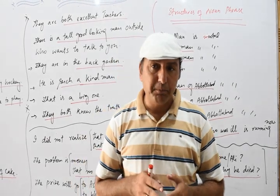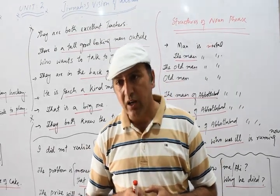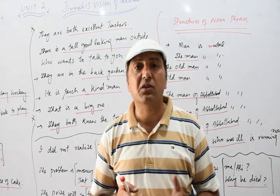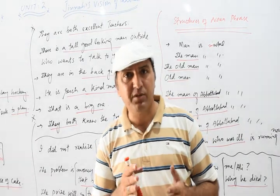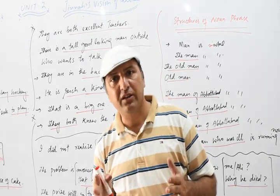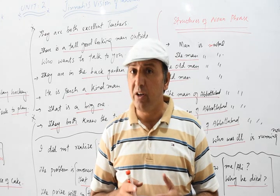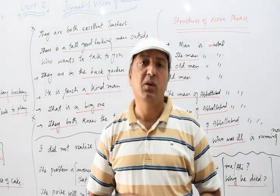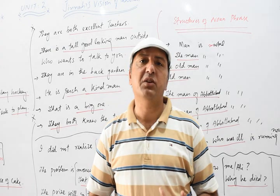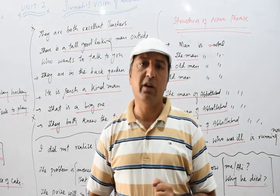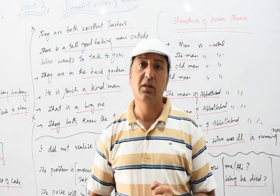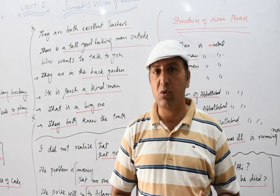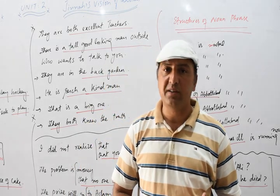In the same way, if we have a clause — what is a clause? A clause is a group of words having subject and predicate. Now if the same clause, which has subject and predicate, works as a noun, we call it a noun clause. So noun phrase and noun clause — today we will discuss both.